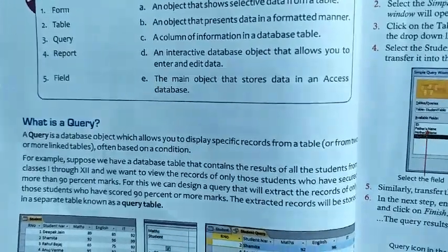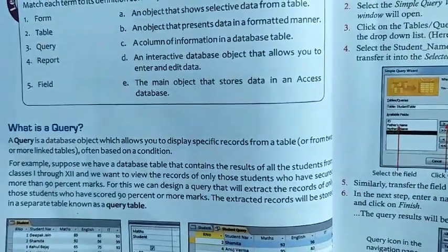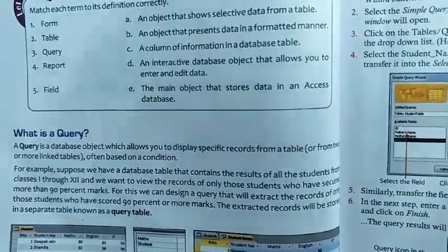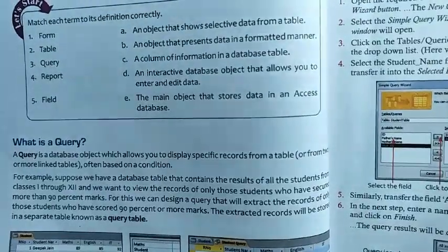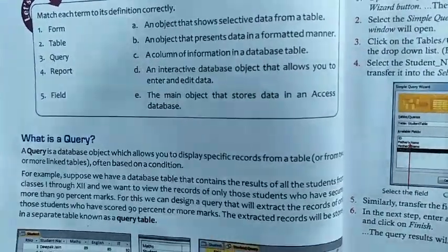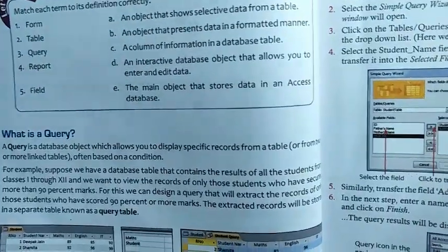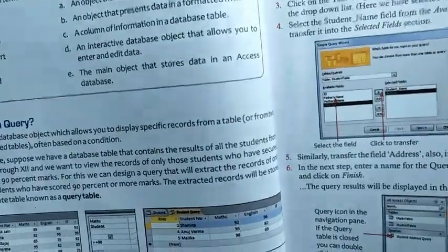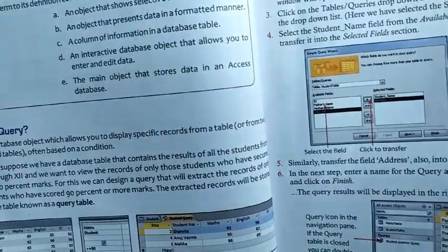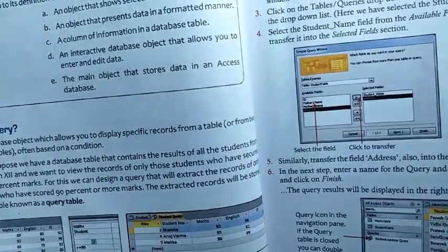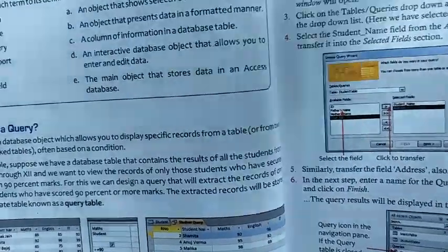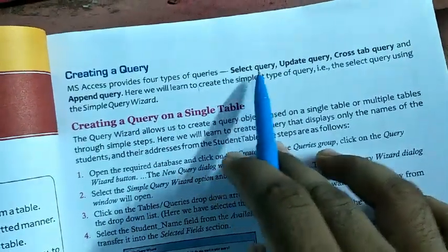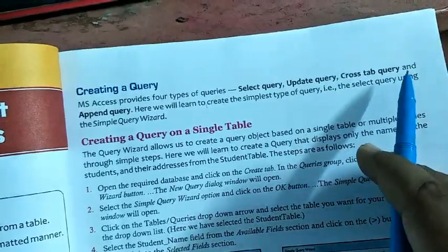That means you can see only those records which you want to display, by using a condition. If you apply a condition, then according to your condition a query object will only display the selected records from one table or from more than one table, but those tables should be linked. MS Access provides four types of query: select query, update query, crosstab query, and append query.